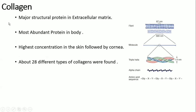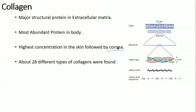Collagen is a major structural protein in the extracellular matrix. It is the most abundant protein in the body. It is highly present in the skin, followed by the cornea. There are 28 types of collagen found, but we will be restricted to some important types only.